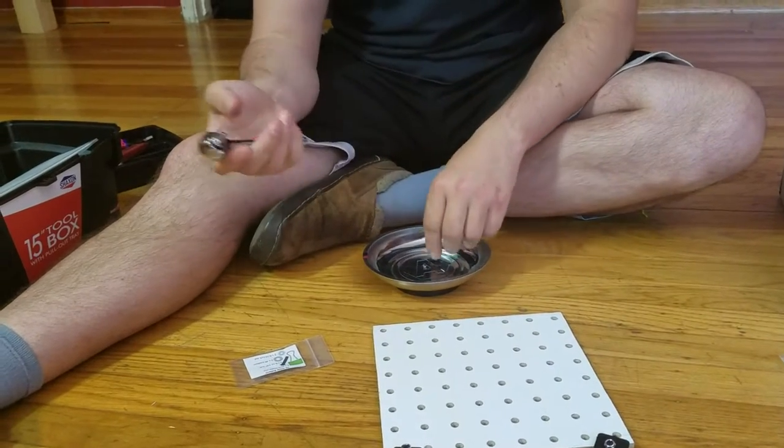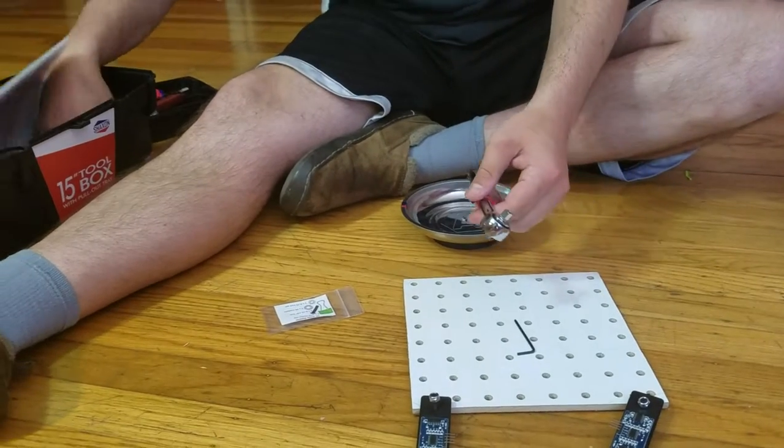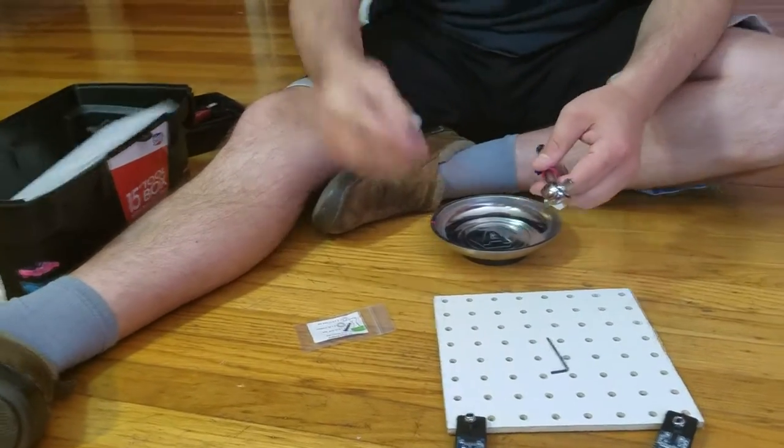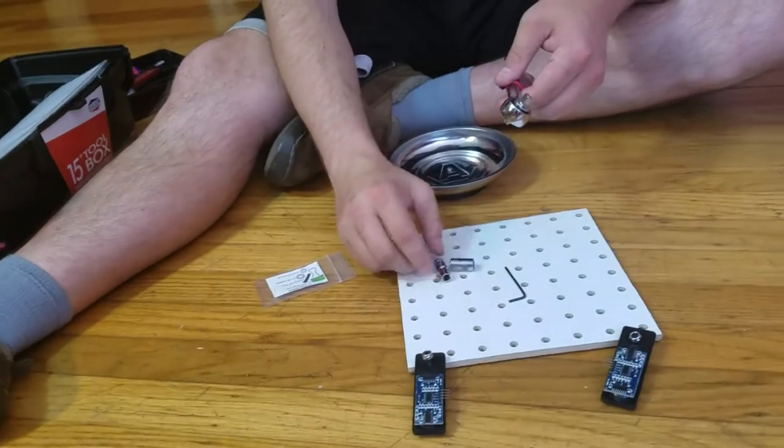So we have the socket wrench and we have this allen wrench. The socket wrench is going to need the socket. It's going to be this one. It's a fatter one. It doesn't have a section that goes narrower.